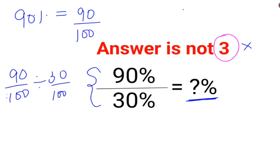Now to do division of fractions, you need to follow the rule of KCF, where K stands for keeping the first fraction as it is, C stands for changing the division sign to multiplication, F stands for flipping or taking the reciprocal of 30 upon 100, which is 100 upon 30.